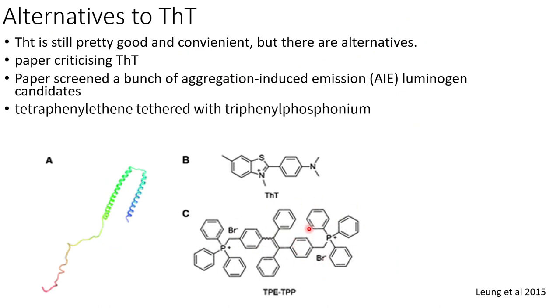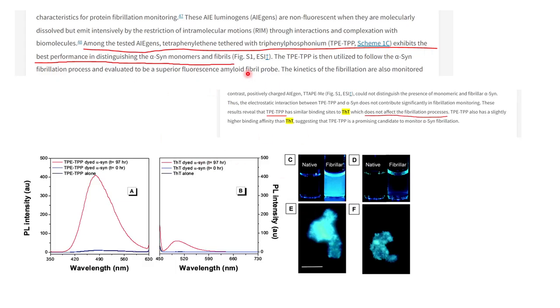But then you also want to think about whether this big bulky molecule might affect the kinetics of your amyloid fibrillization. You don't want the molecule that monitors the kinetics to affect the kinetics because that's bad. You want the kinetics to be as natural as possible. So they basically said that TPE-TPP doesn't affect the kinetics of fibrillization, isn't much different to ThT because ThT slightly does slightly affect the kinetics.